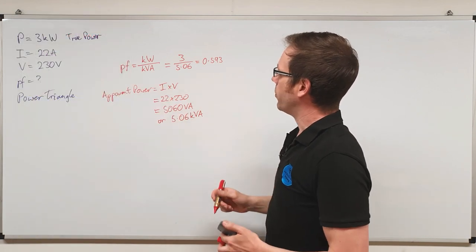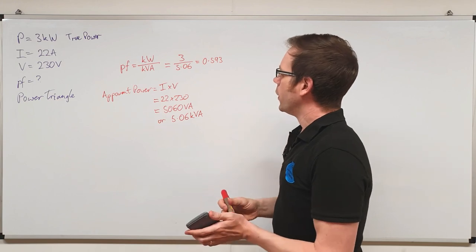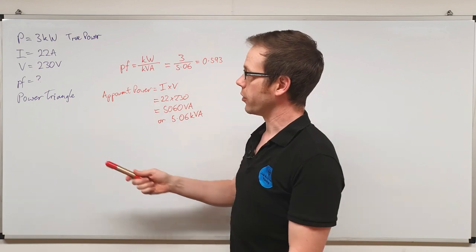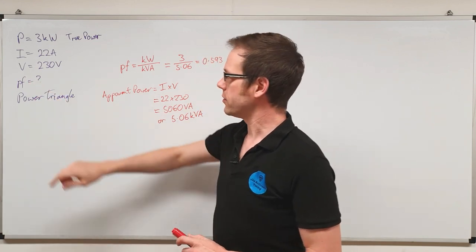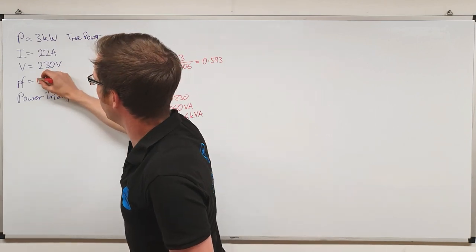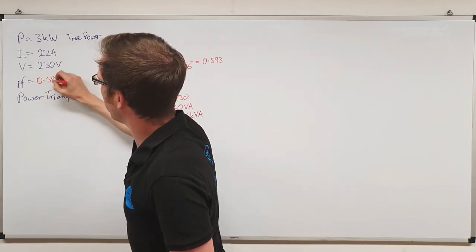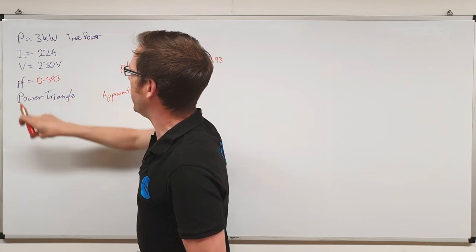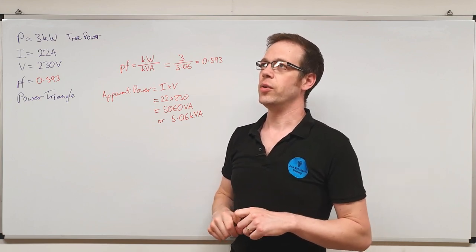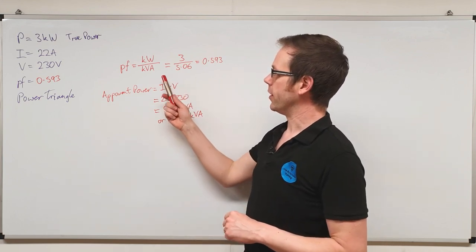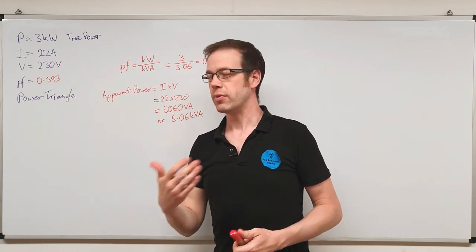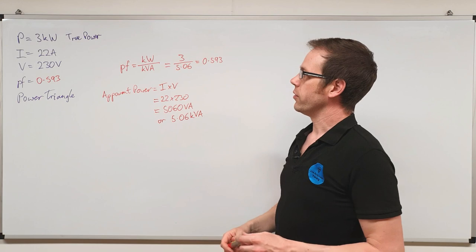So the power factor is equal to 0.593. Notice there are no units put on that, because power factor is simply a ratio - it is not measured in anything. It's not a unit in the sense of having a letter we put on the end. So 0.593 is the power factor. We've solved one part of the question. Now, what do we do with that information?